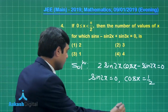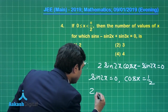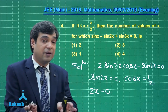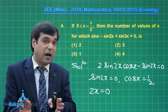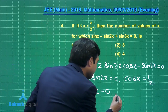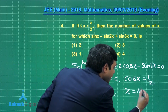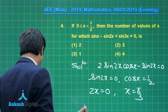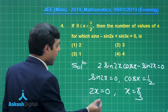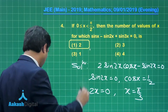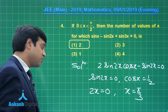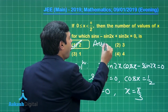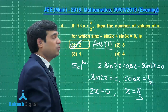Given the interval is 0 to π/2 where π/2 is excluded: from sin 2x = 0, we get 2x = 0, so x = 0. x = π/2 is not possible as it is excluded. From cos x = 1/2, we get x = π/3. So there are just two solutions: 0 and π/3. The correct answer is option number 1.